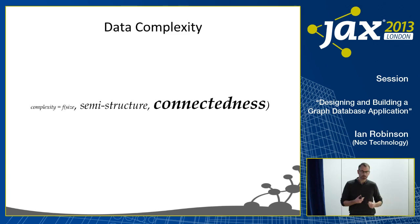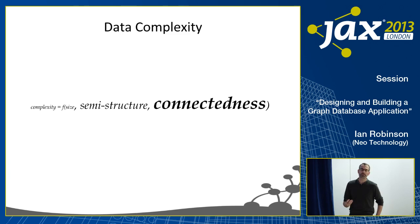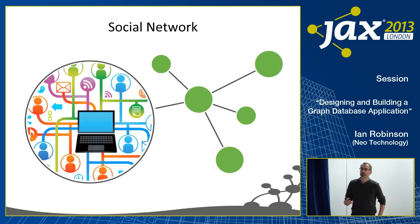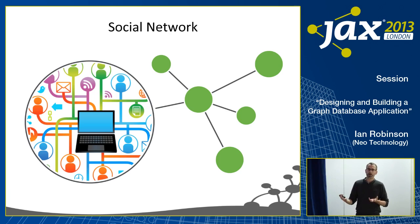Some examples from different domains illustrate the kinds of questions that depend on connectedness — understanding the ways in which the entities in our domain are connected. In social networking, which friends or colleagues do we have in common? To answer that question, we need to understand who the different people are within our domain and how they're connected — whether by work, school, or some other kind of social connection.